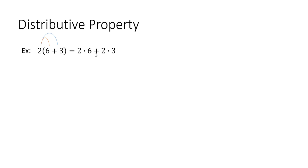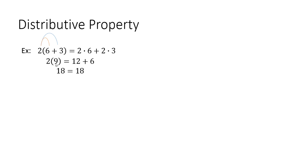The biggest thing with the distributive property is to make sure that you multiply two by everything that's on the inside of the parentheses: two times six plus two times three. To show they're equal — adding what's in the parentheses first, six plus three is nine, so two times nine on the left-hand side. On the right: two times six is 12, plus two times three which is six. Two times nine is 18, and 12 plus six is also 18, so those are equal.